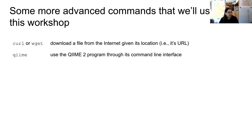Briefly, I want to mention a few of the more advanced commands we'll use in this workshop. We will be using curl or wget — we might use these interchangeably. What these commands do is download a file from the internet given its URL, so you can use one of these commands to download a file to the server you're currently connected to. The other command we'll spend a lot of time with is the chime command, which allows you to use the CHIME 2 program through its command line interface.